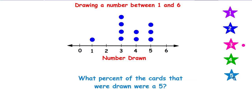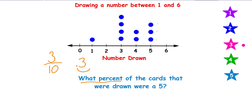What percent of the cards that were drawn were a 5? Pause the video and give it a shot on your own. If you're looking for the percent, it needs to give you a fraction. The total number of dots is 10; the number that are 5 is 3. Three tenths is 0.3. You move your decimal point 2 places, and 30% of the numbers were a 5.